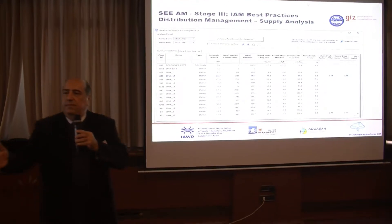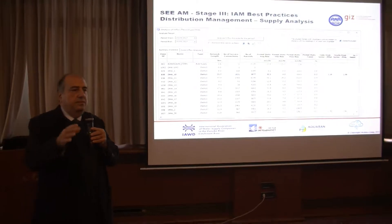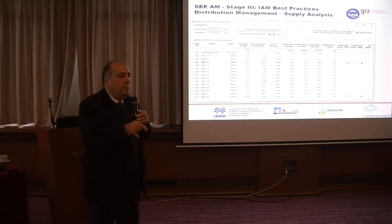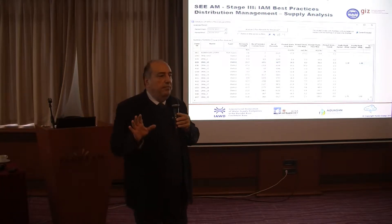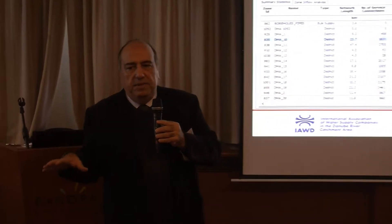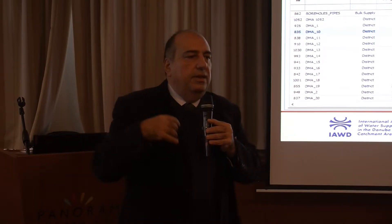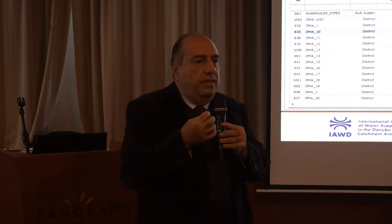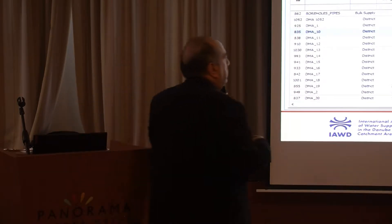For utilities that have a few bulk meters, that's not a big issue. If you have 2 or 3 bulk meters, you manage them. But the problem is with time you start putting more and more bulk meters into the system — the 3 become 10, they become 15, they become 20. And how do you manage these bulk meters? Telemetry — excellent. Now you have 20 bulk meters and a very nice telemetry system, with all these signals and records coming in with interruptions, wrong readings, wrong flows, spikes. How do you use this data? How do you get from the telemetry readings to balance your DMA zone? That is the question addressed by the module for supply analysis.